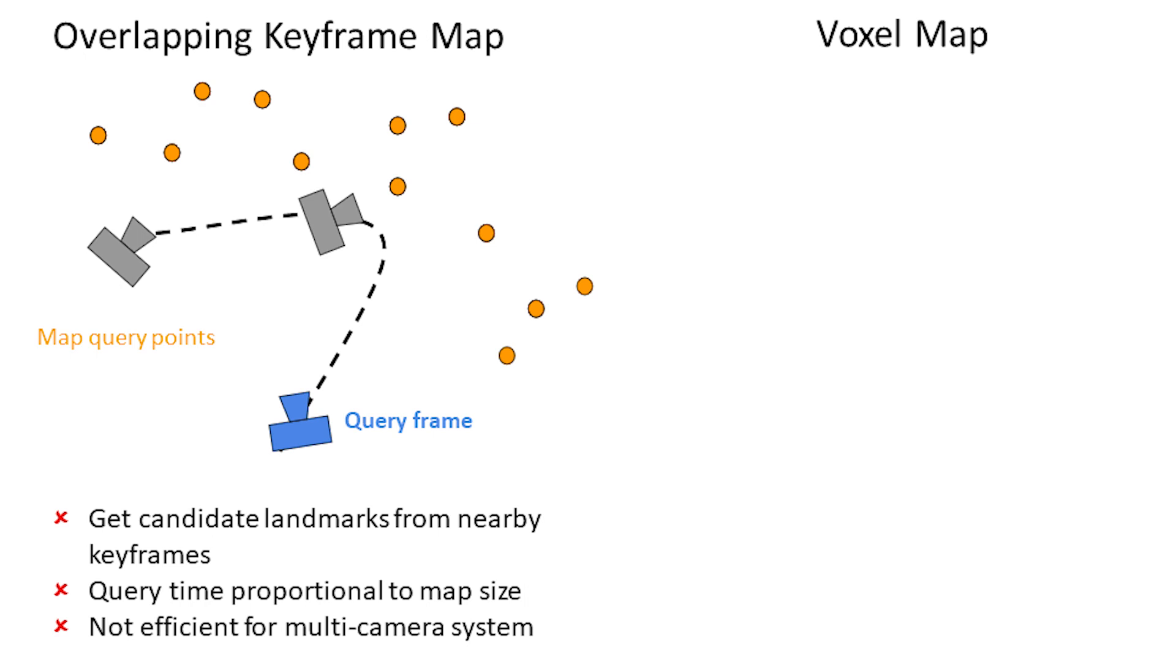The success of keyframe-based SLAM is attributed to bundle adjustment on keyframes. This map is represented as the latest N keyframes. For tracking, these methods use information from nearby overlapping keyframes to associate images to map points. This only allows limited geometric reasoning.